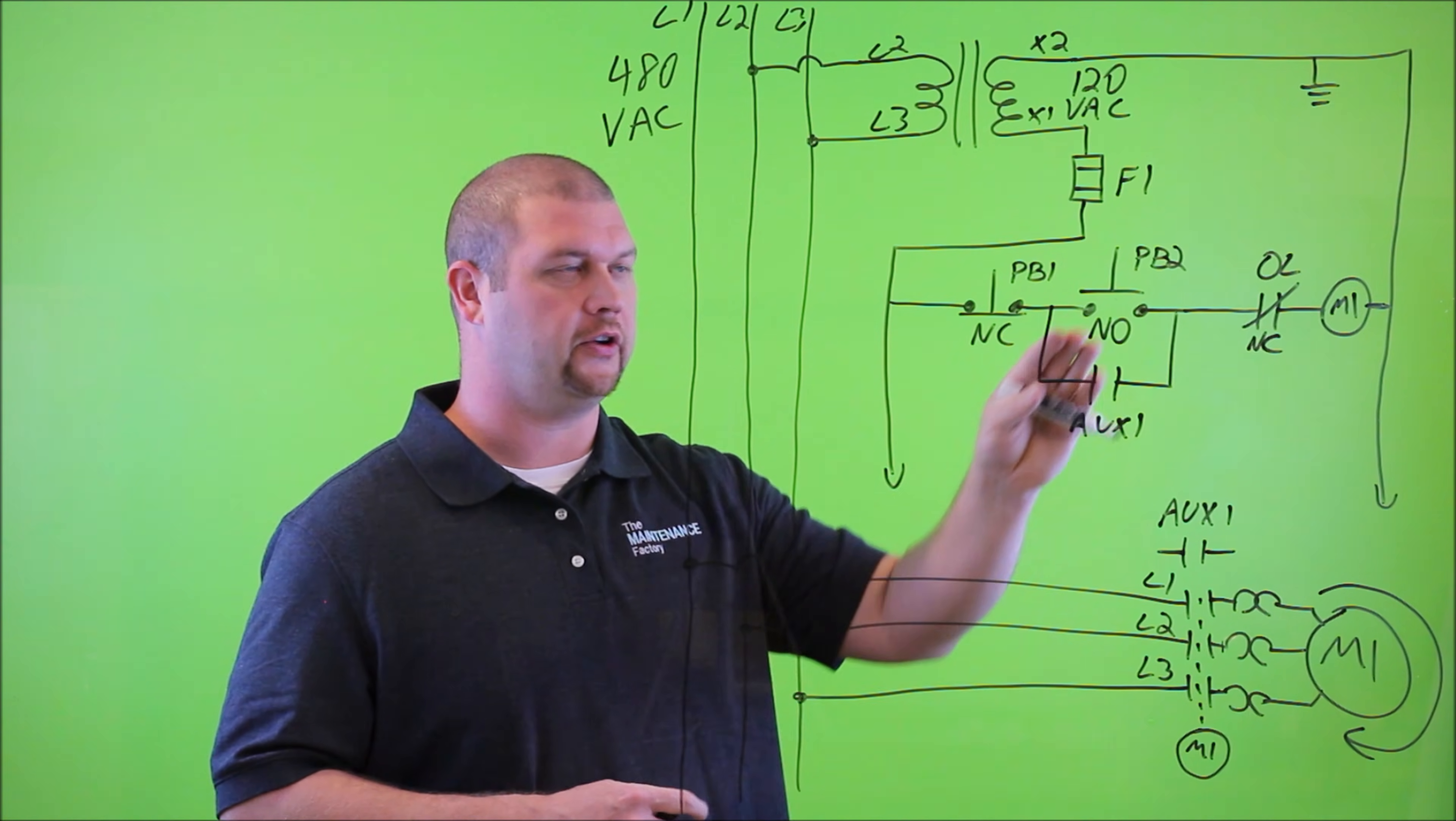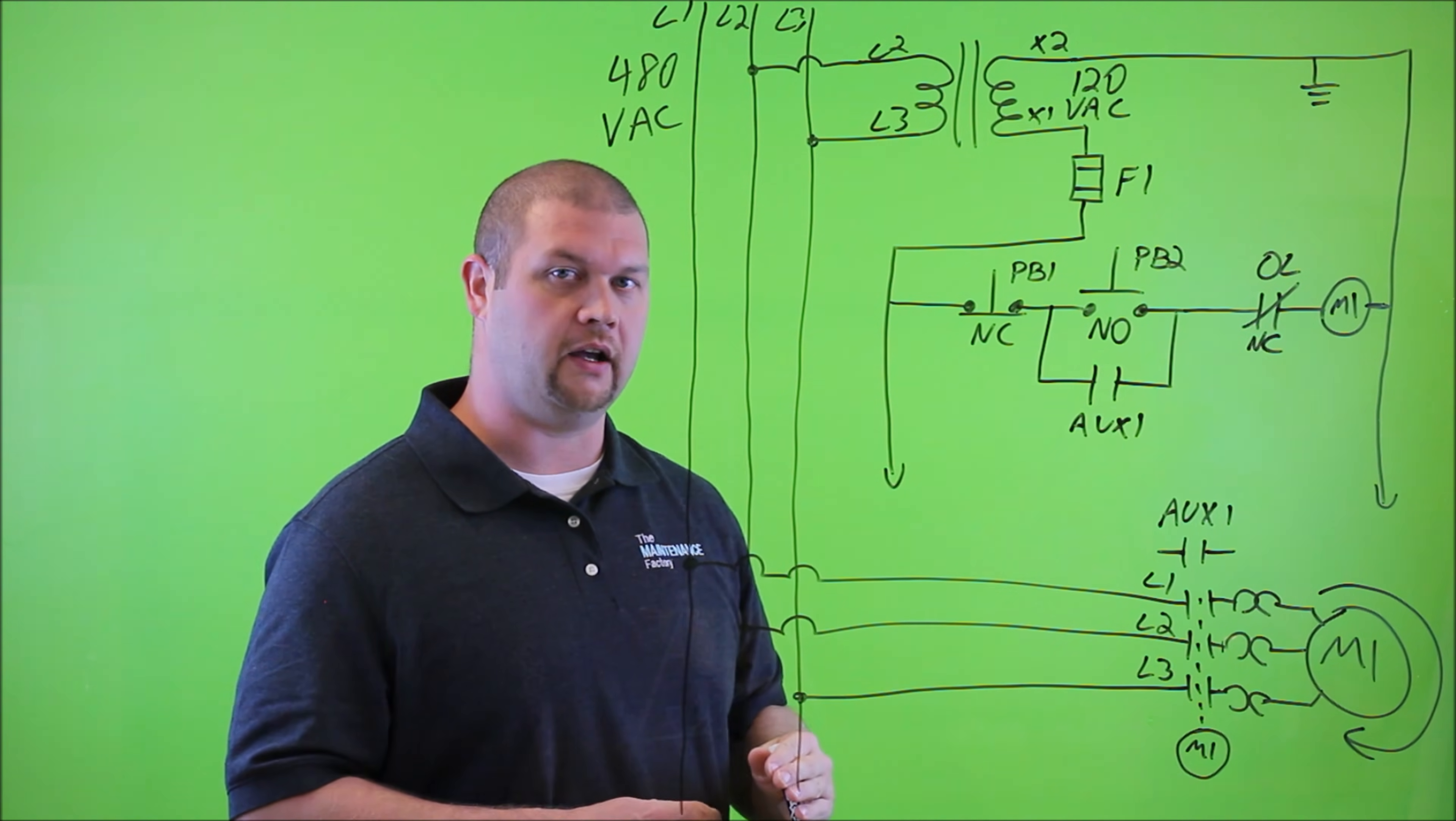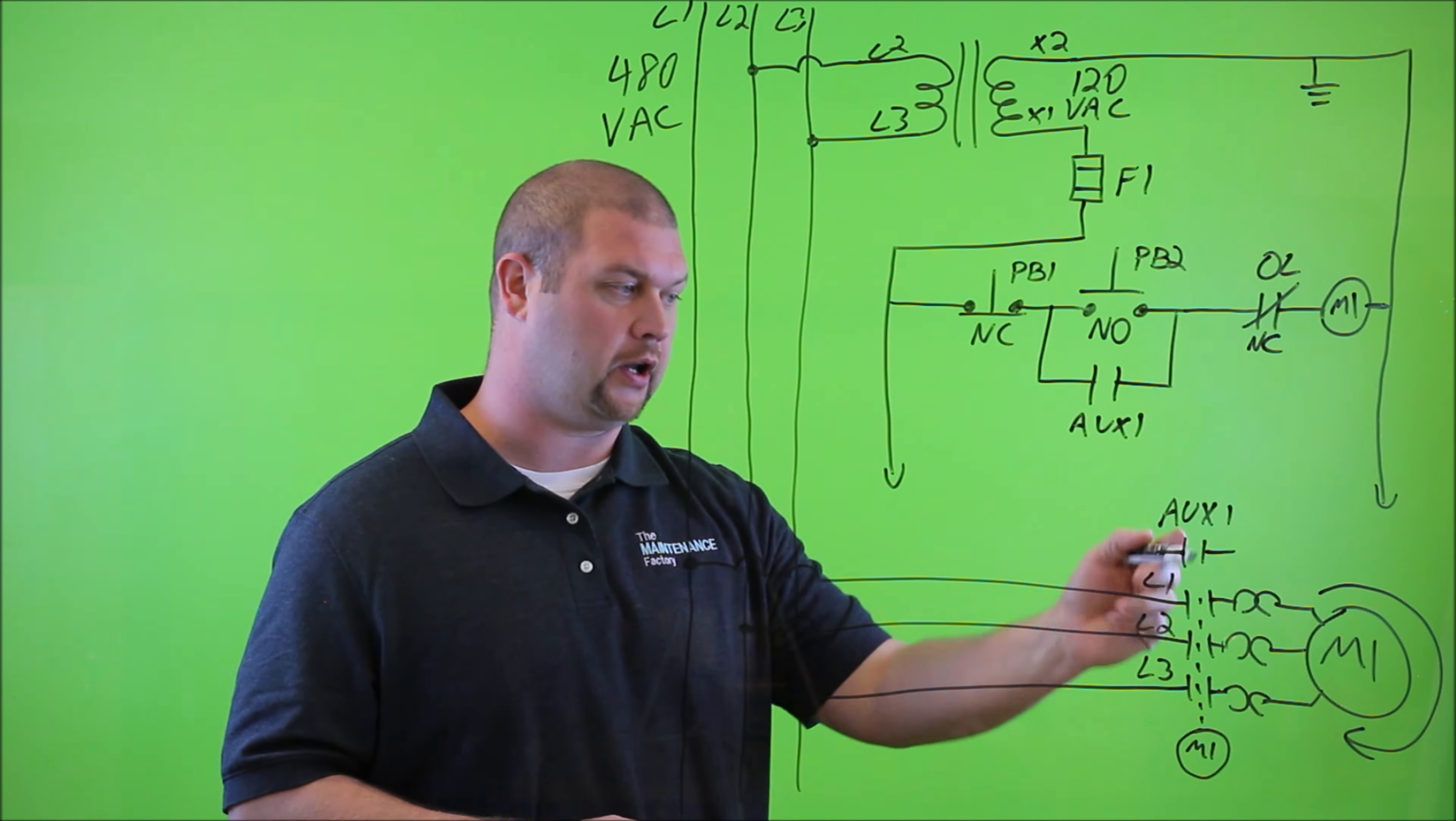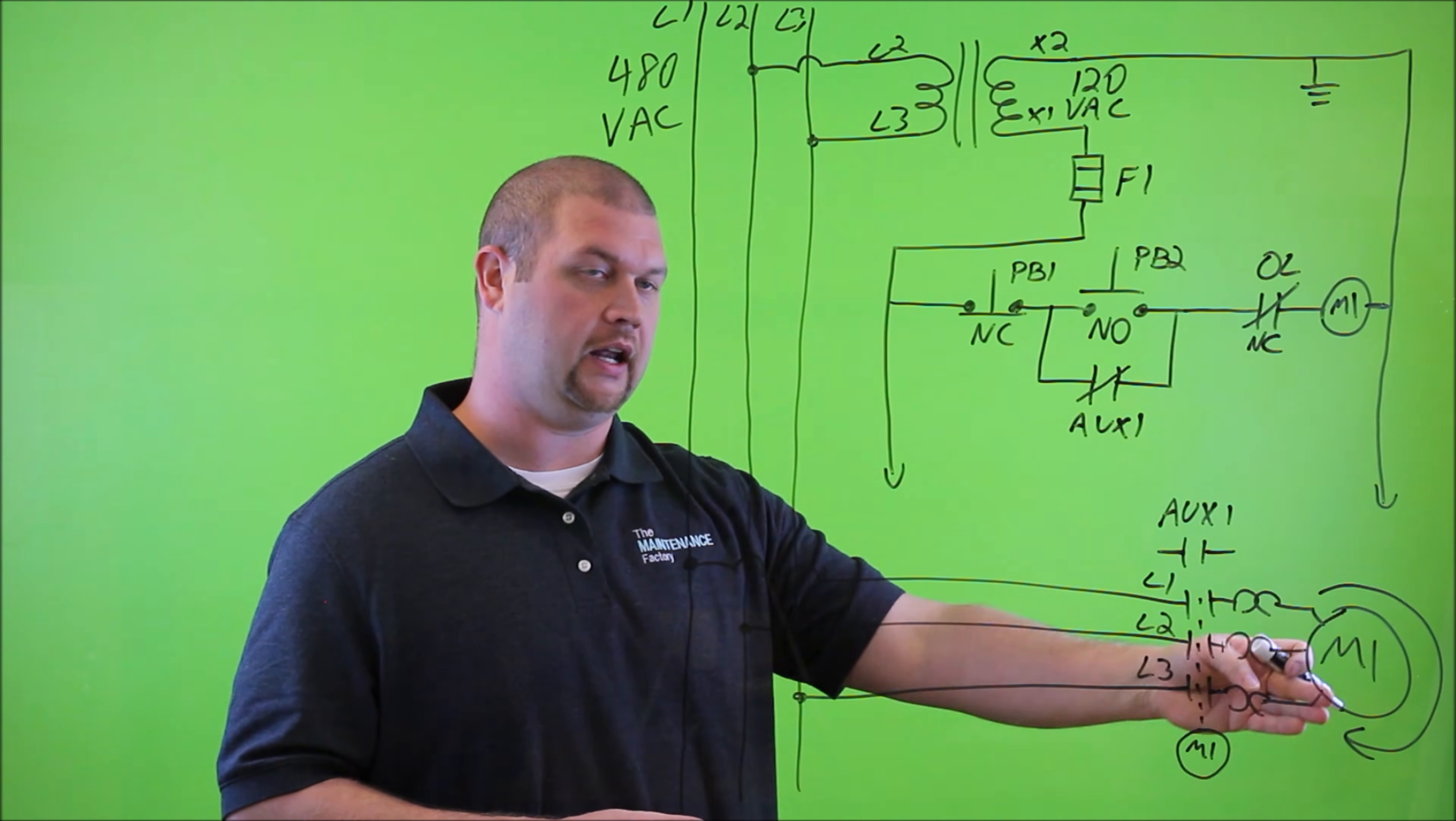So let's go back and review how this circuit would then work. So we would go back to the start button. We would depress the start button. Current would then flow across the circuit here, getting to the coil, energizing that coil, creating that electromagnetic field, thus closing these three contacts. Now, simultaneously, as these three contacts close, this auxiliary contact will close. So right here, that will go to a closed state. Now, at that time, the motor will obviously begin its rotation.